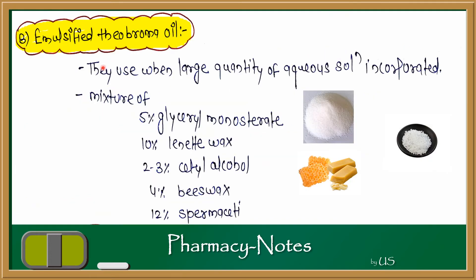Next, emulsified theobroma oil is used when a large quantity of aqueous solution is incorporated, since plain theobroma oil is not compatible with aqueous systems. This mixture consists of 5% glycerol monostearate, 10% lanette wax, 2-3% cetyl alcohol, 4% beeswax, and 12% spermaceti. These ingredients are added to vary the melting point and improve water solubility and oil solubility.